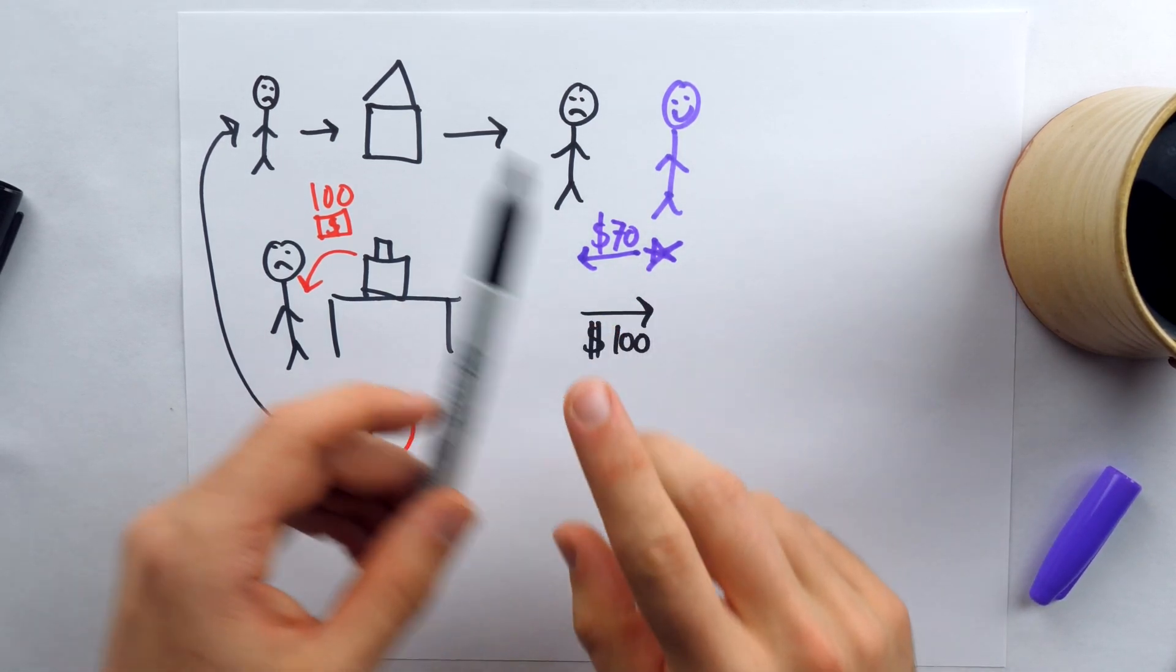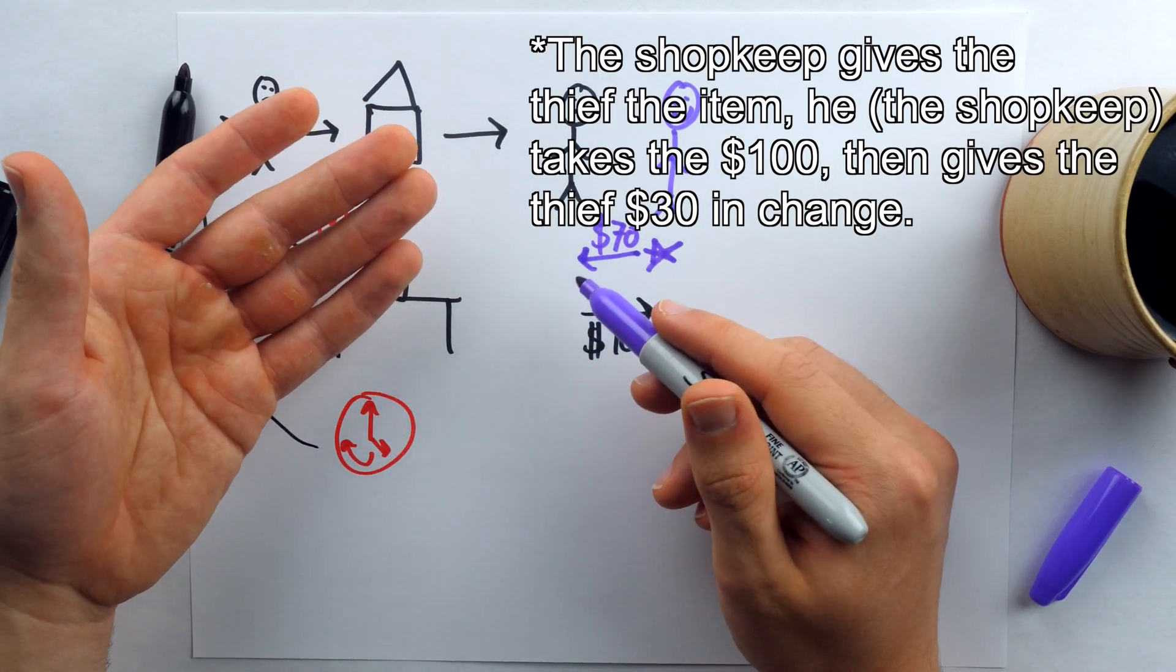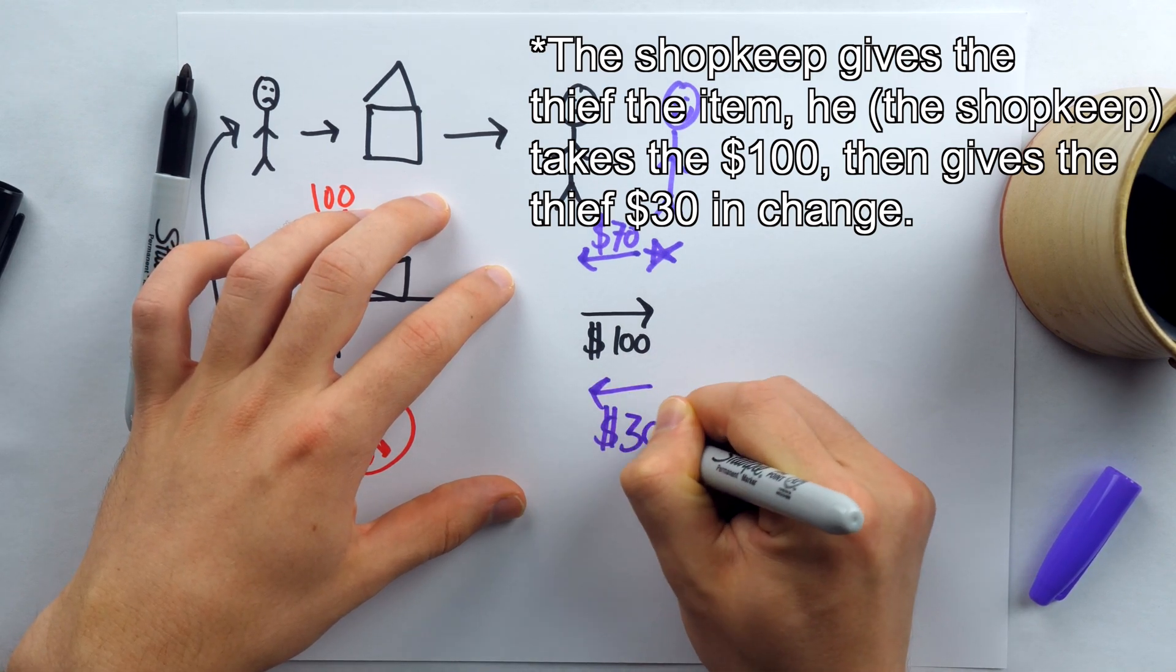Now to get that, the man gives the shopkeep the $100 bill that he stole previously. Now, of course, he's only buying an item that's worth $70. And so the man gives him the item, he takes the $100 bill, and he gives the man $30 in change.